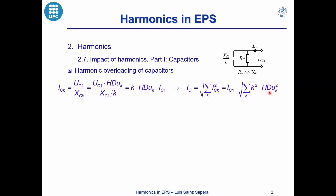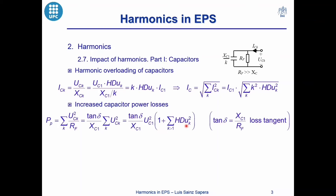The greater the harmonic voltage distortion, the greater the capacitor current, which may produce the overloading of the capacitor banks. Harmonics can also produce an increase of capacitor power losses.